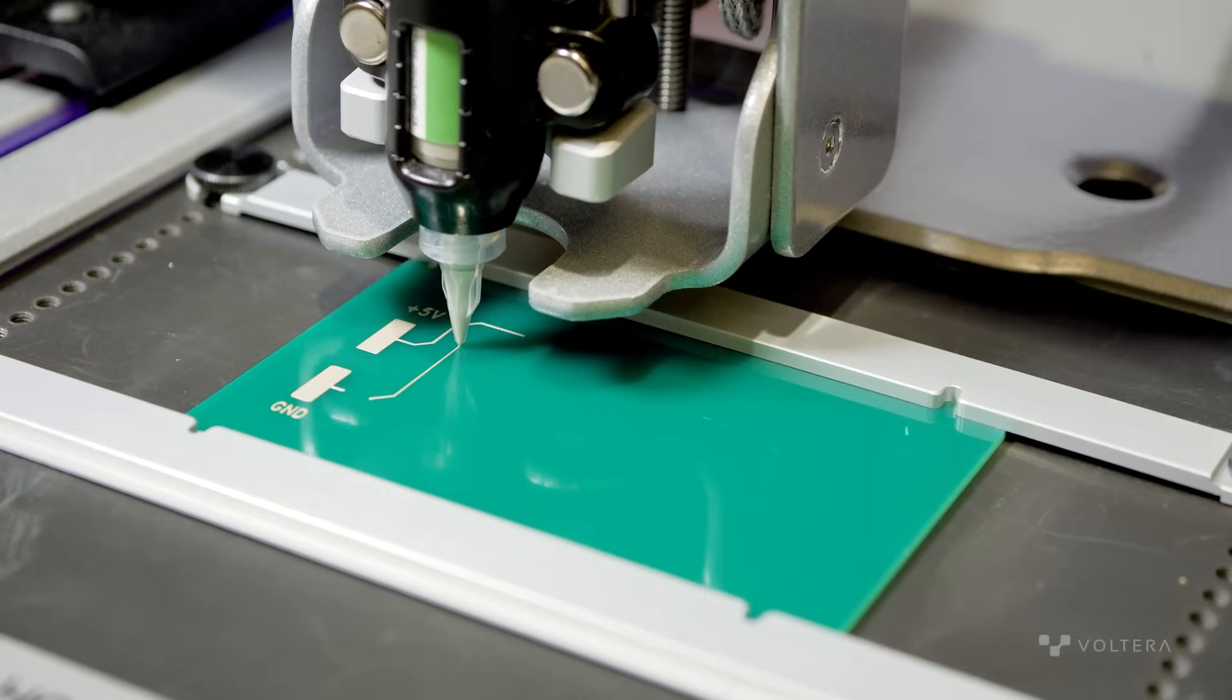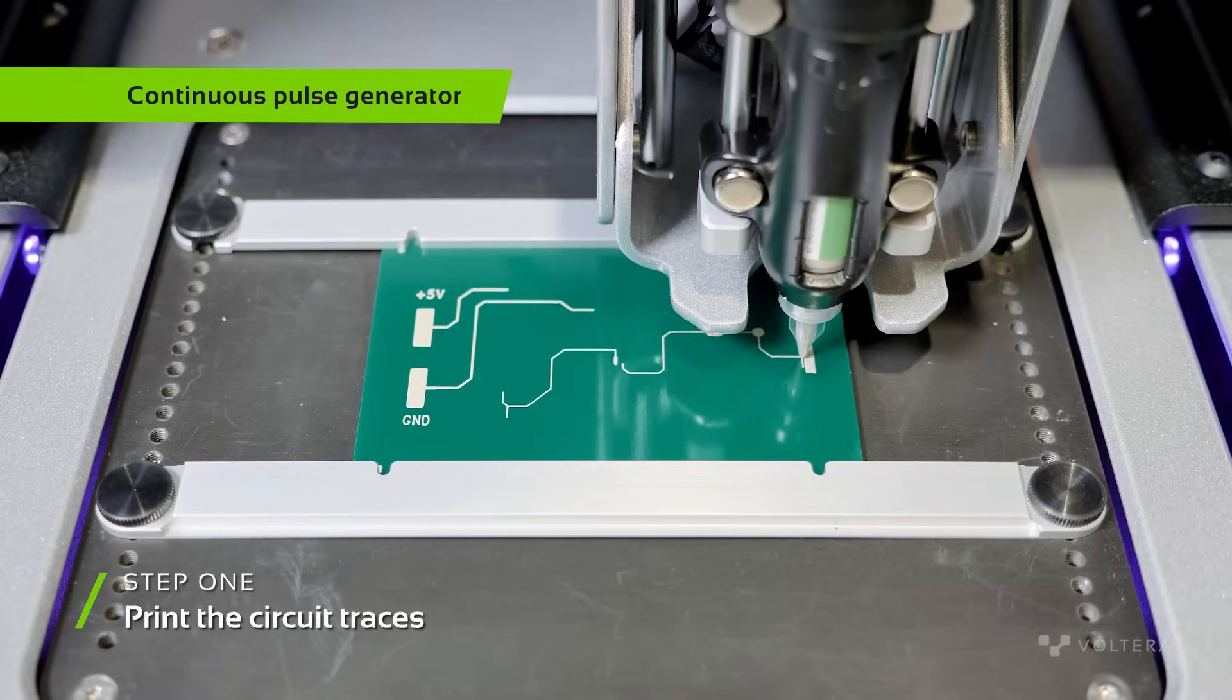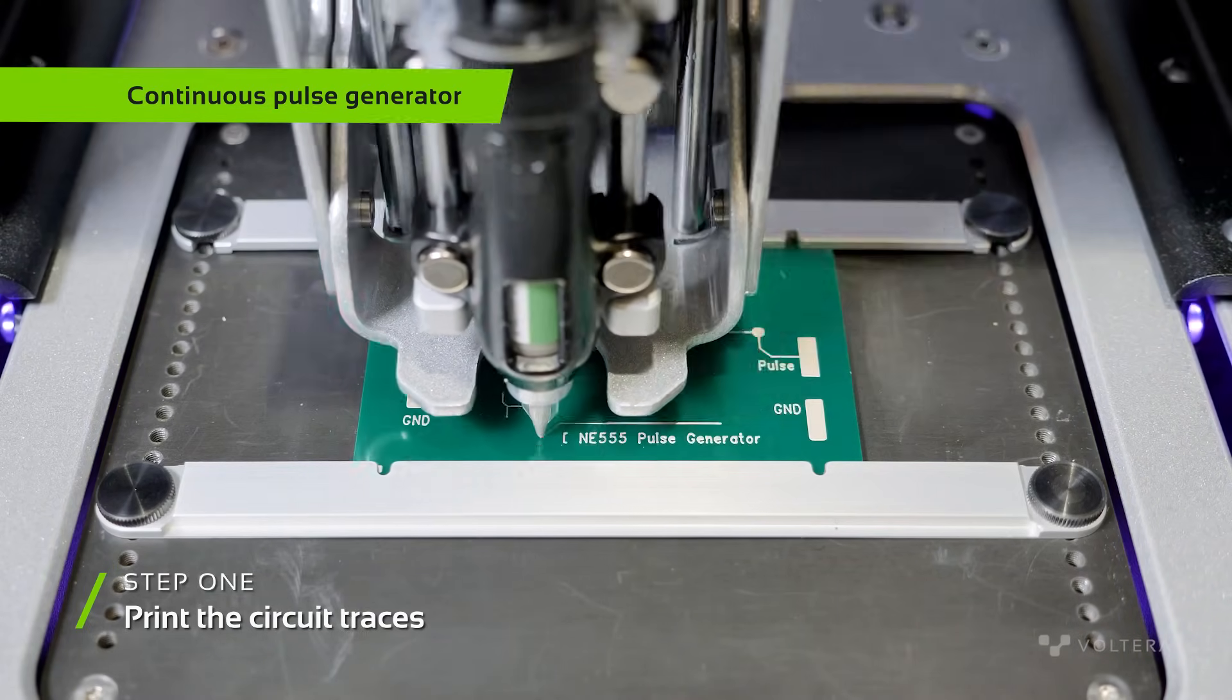The second PCB is a continuous pulse-generating circuit. It's designed to take the output of the voltage regulator circuit and convert it to continuous electrical pulses.